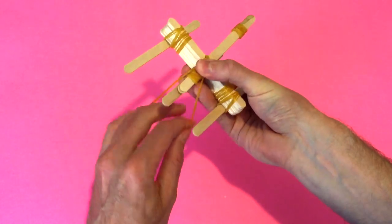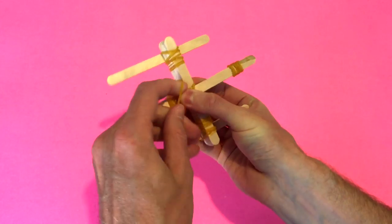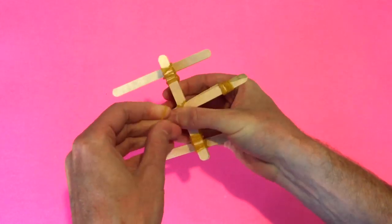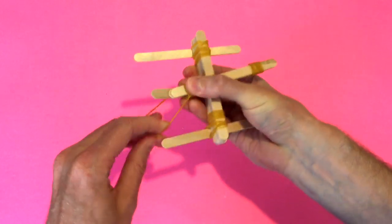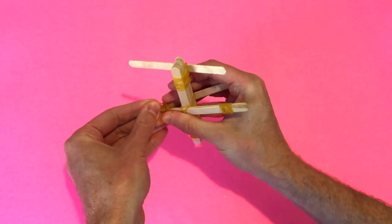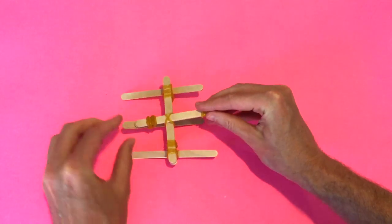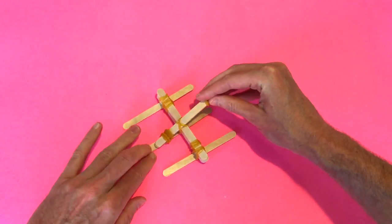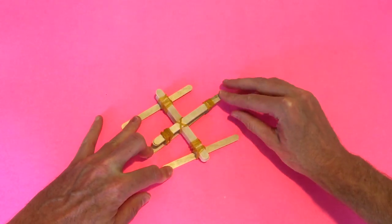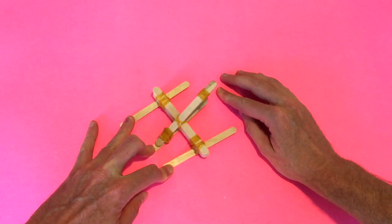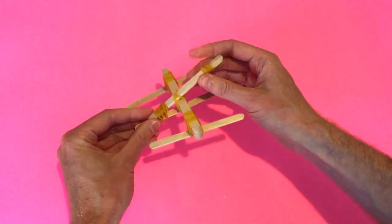So depending on how many times you loop this rubber band over, that will alter how strong the catapult is. I'll just try putting it over three times to begin with. That's very strong as it is.